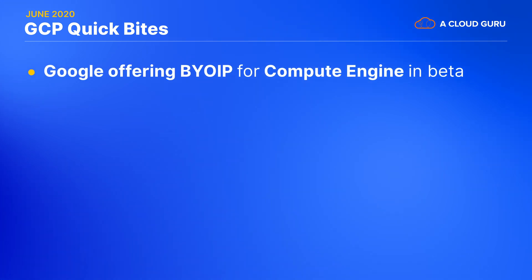Google's Bring Your Own IP service is now available for Compute Engine in Beta. Bring Your Own IP allows companies to bring their own public IP addresses while letting Google Cloud handle the routing announcement for you. Availability of the service is subject to approval from Google, and applicants must be wanting to bring blocks of 256 addresses or more to be considered. Google's documentation on this is still a little light, so stay tuned for further details in the future.